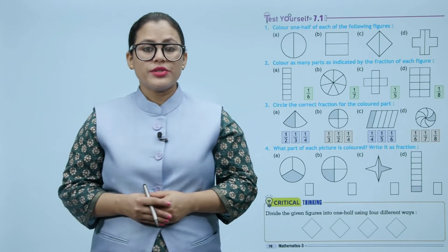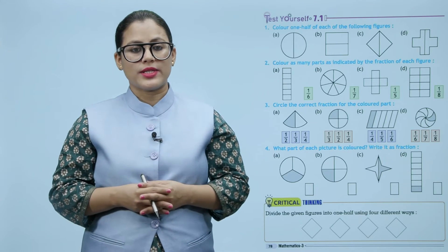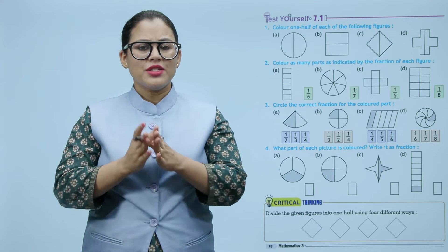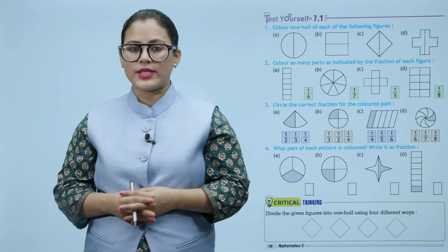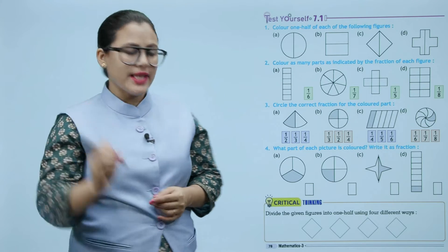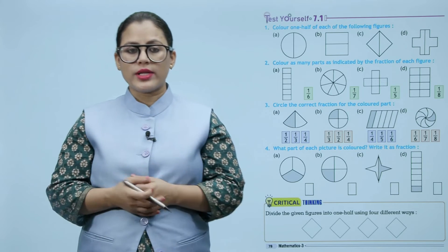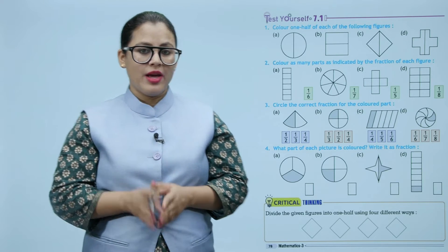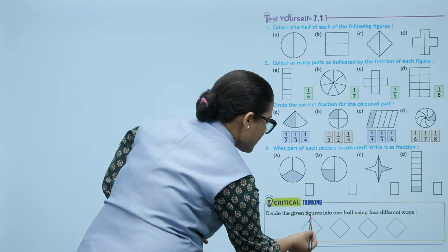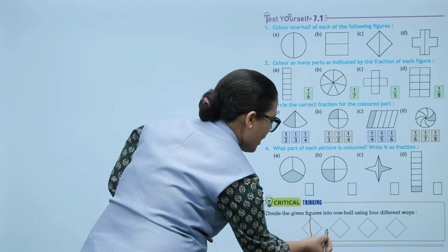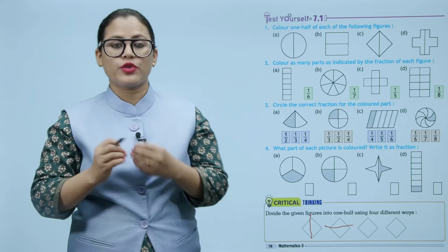Okay children, now you have an exercise. This practice you will do yourself. Critical thinking: divide the given figures into one-half using four different ways. You have been given the same figure and you will do it in four different ways.